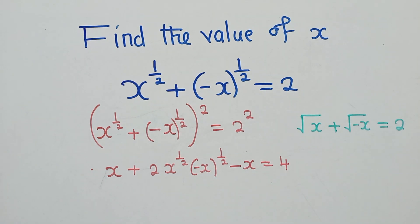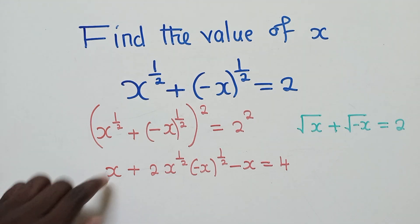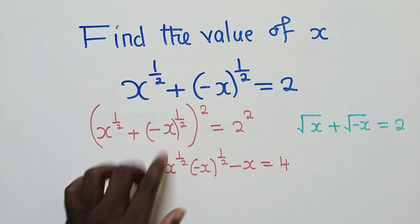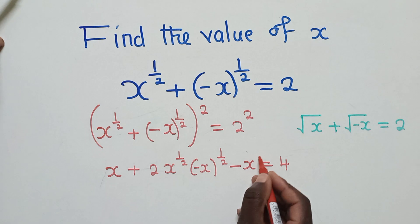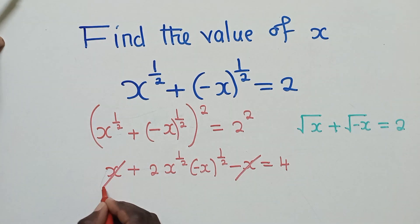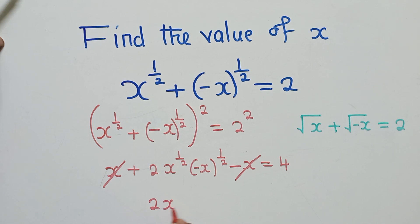So whenever I try to multiply this by itself because of the power 2, this is what you are going to get this side. So when you get this, if you can see negative x and x will cancel, we shall remain with 2x power 1 over 2 negative x there power 1 over 2 is equal to 4.